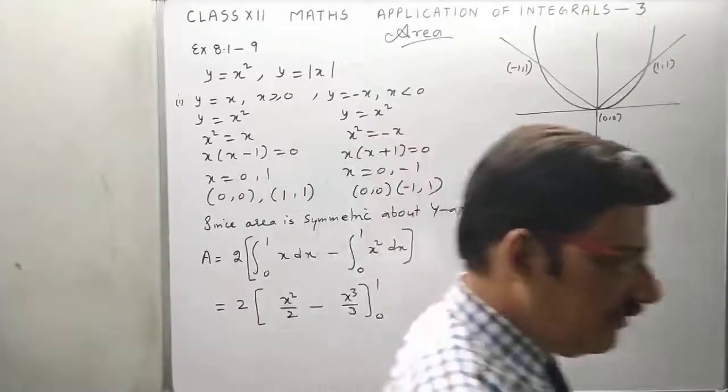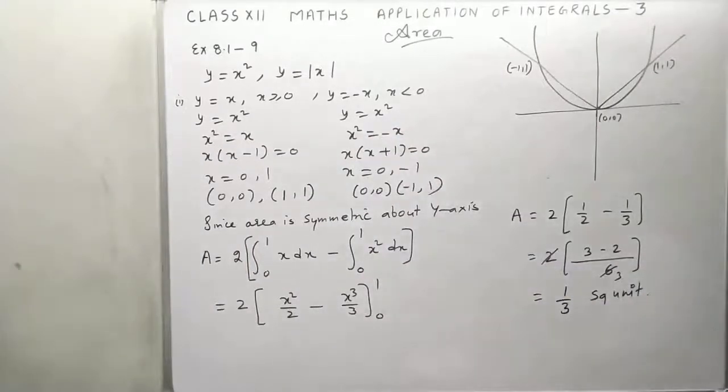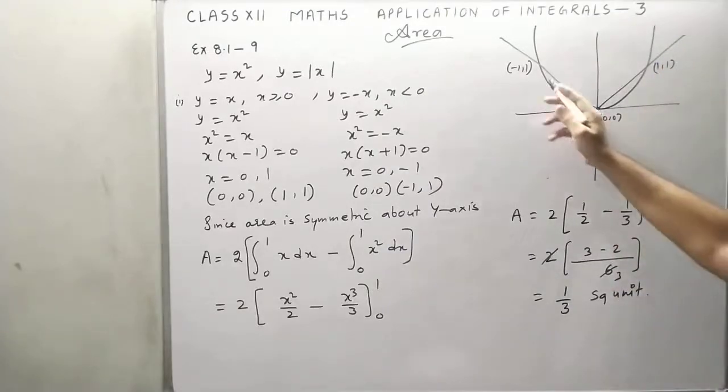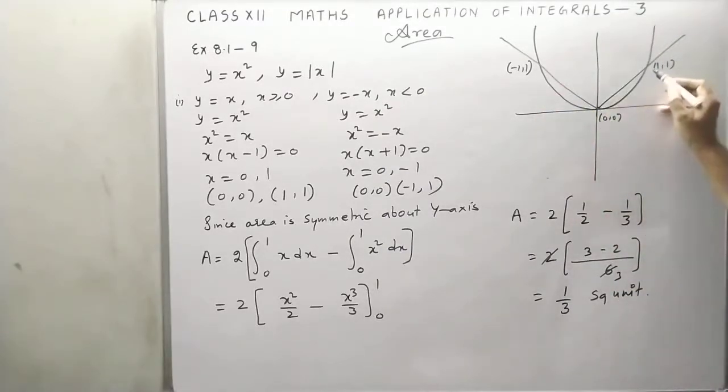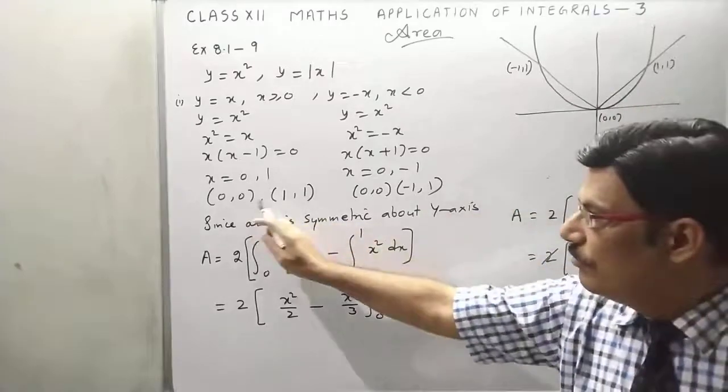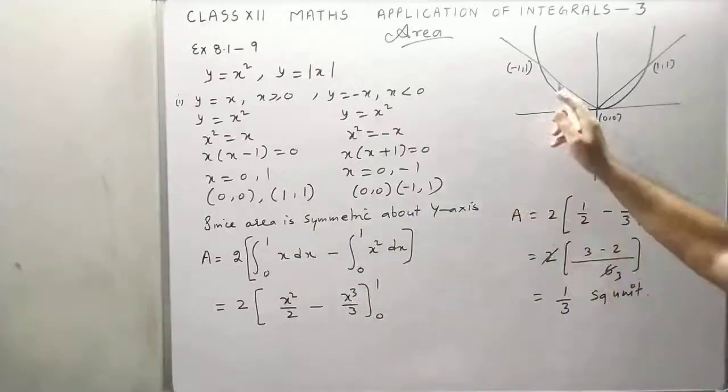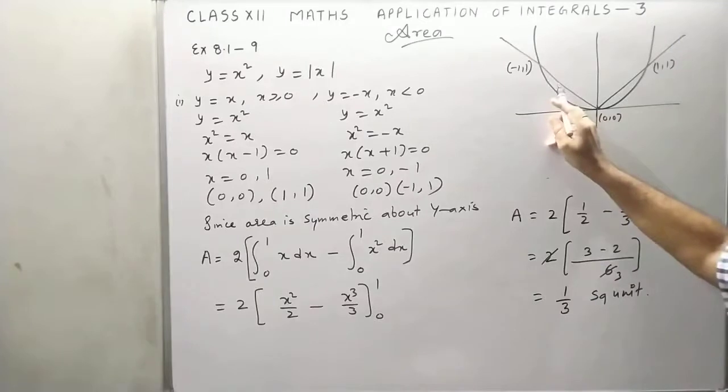First of all, we draw this graph. As you can see, this is parabola. Now these two points (0,0), (1,1), these two points, and (0,0), (-1,1). We have to find the area between these two.